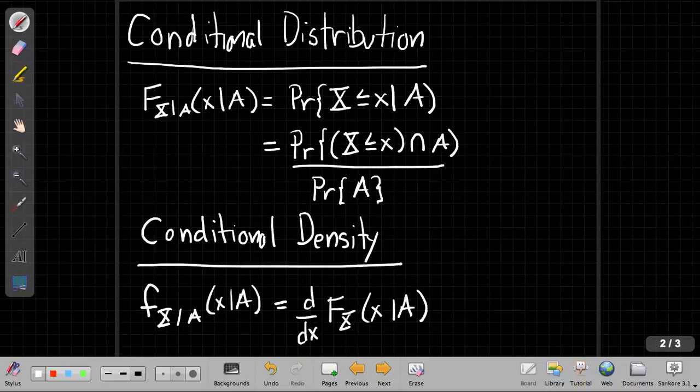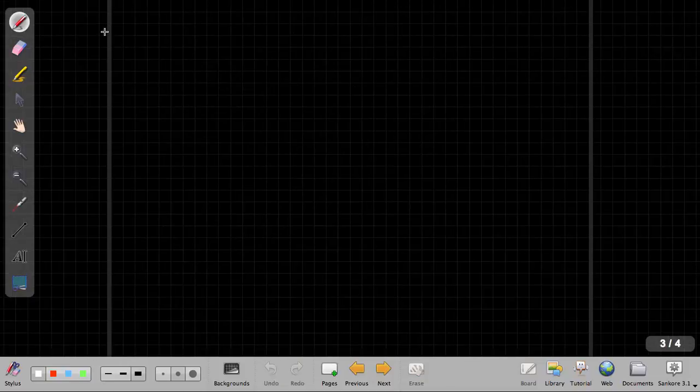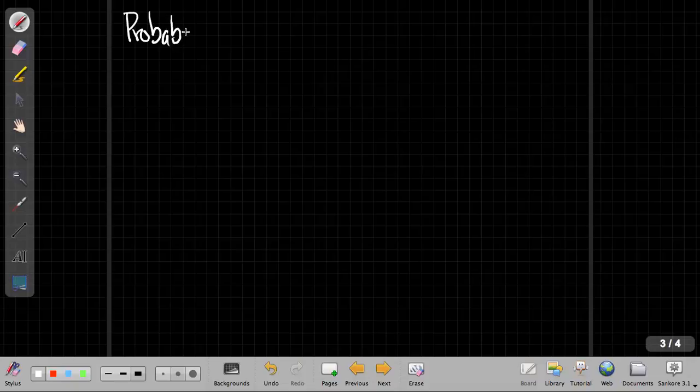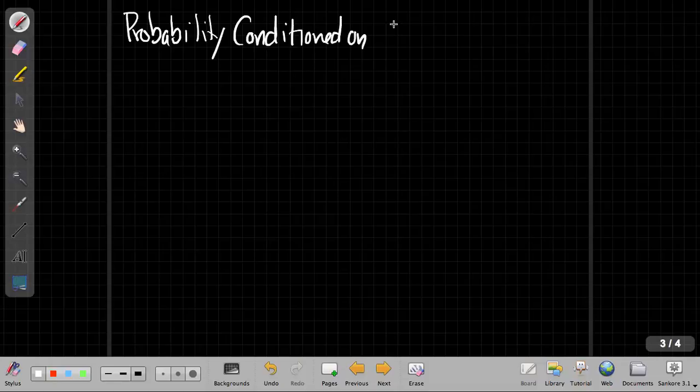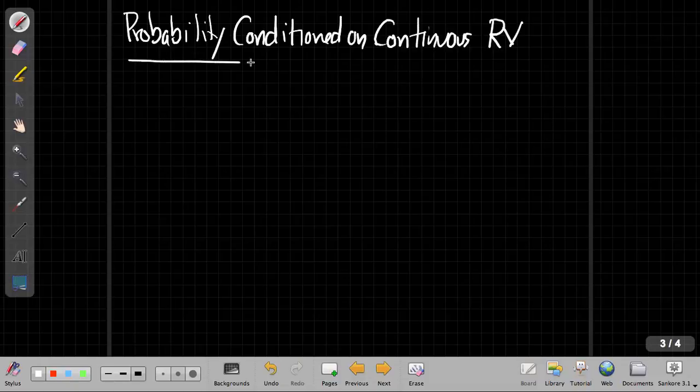The last thing that's kind of tricky that we need to work through is a little bit new, is, let me start on a new page here, is the probability conditioned on a continuous random variable. And this will be another thing we're going to need when we go to find likelihood ratios and other hypothesis test decision rules.